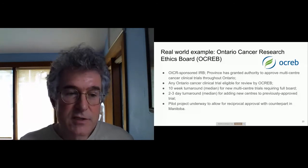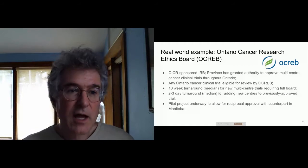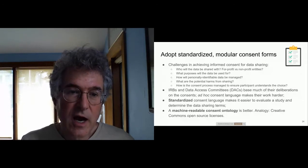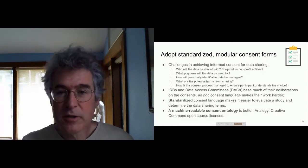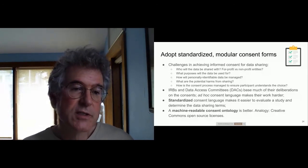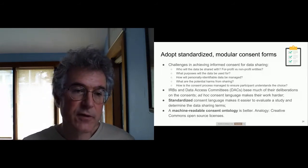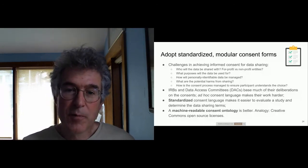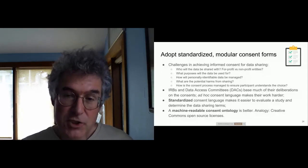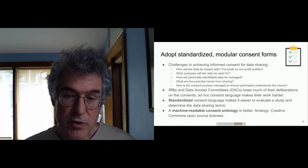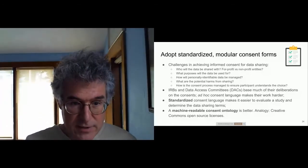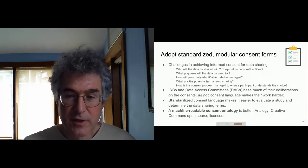The 10 weeks, however, is still a long time. And if you look at what's taking that 10 weeks, a lot of it is reading and reviewing the consents in detail. Currently, each consent is a thing unto itself — created in an ad hoc way with different non-standardized language. The things IRBs look for include: who will the data be shared with, are there for-profit entities involved, what purposes will the data be used for, how will personally identifiable data be managed and protected, what are the potential harms, and how is the consent process managed to ensure participants understand the choice.